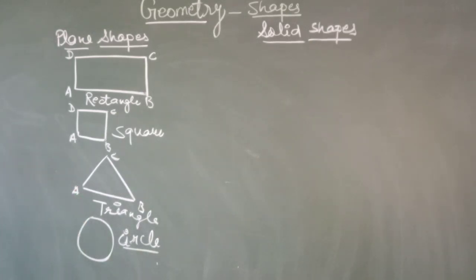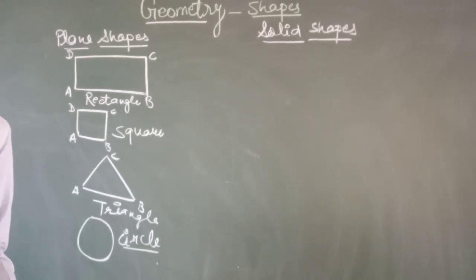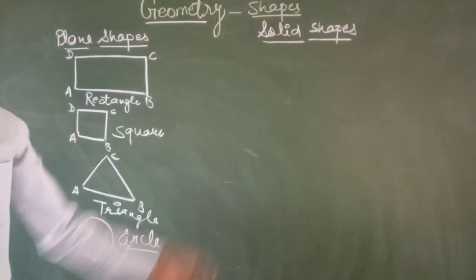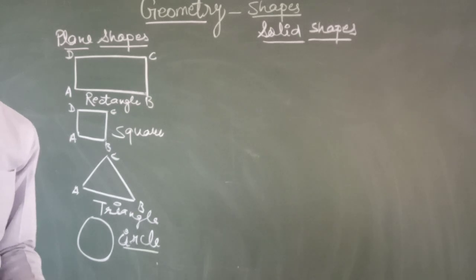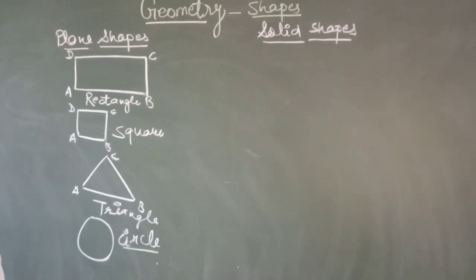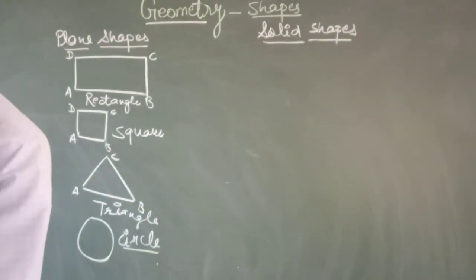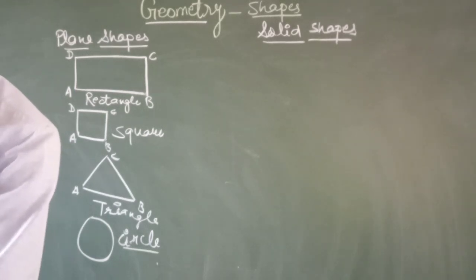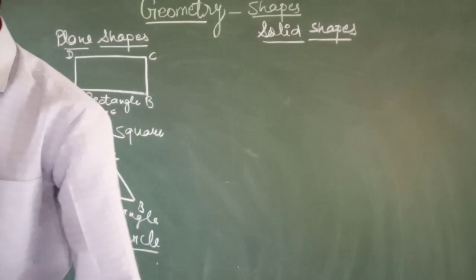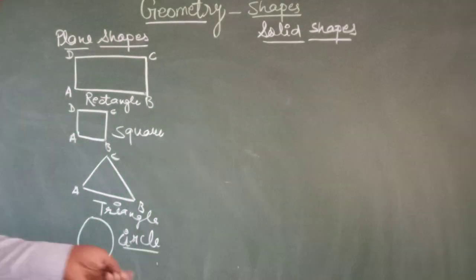Now, let's discuss about solid shapes. Solid shapes have length, width, and height. They also have faces, edges, and corners. We will learn about how many faces, edges, and corners different solid shapes have. We will look at three or four shapes in solid shapes.